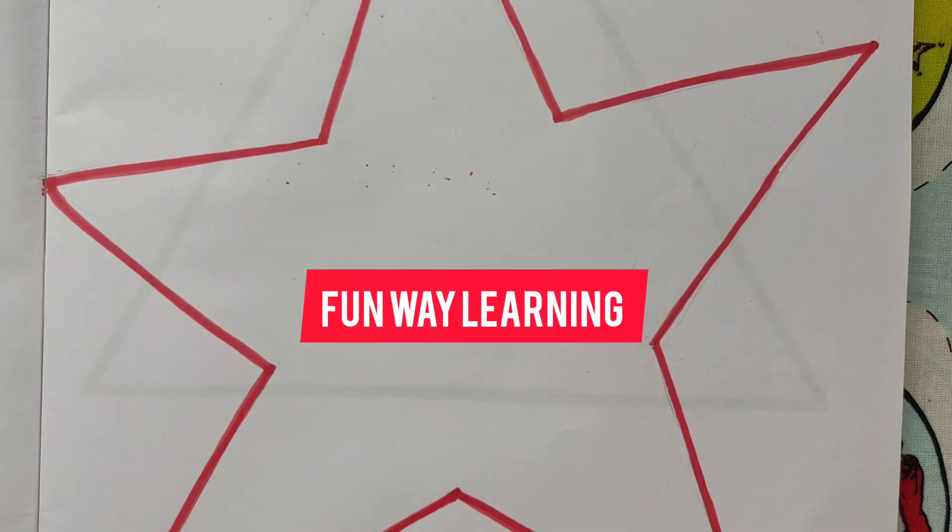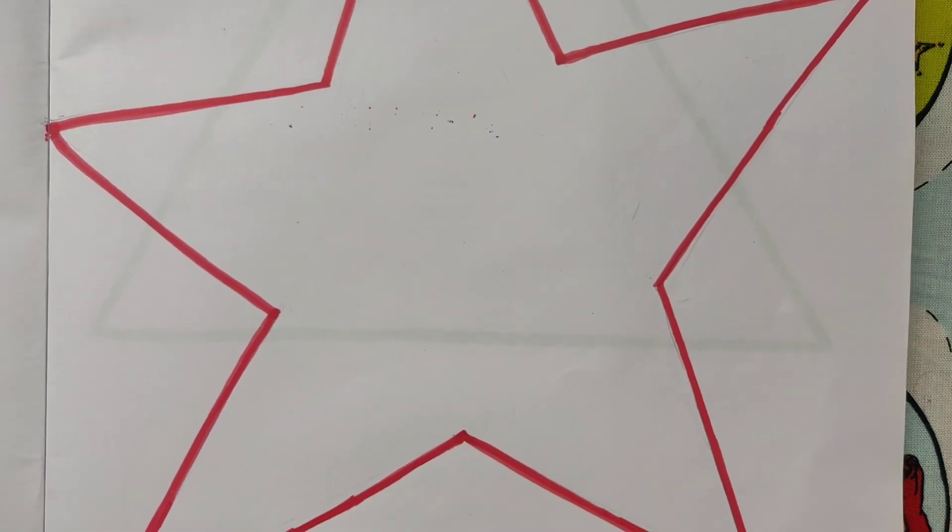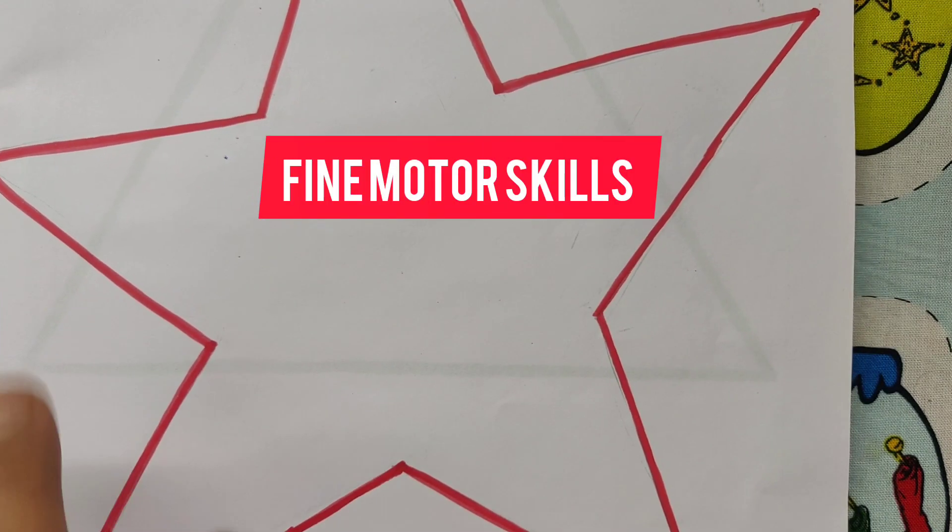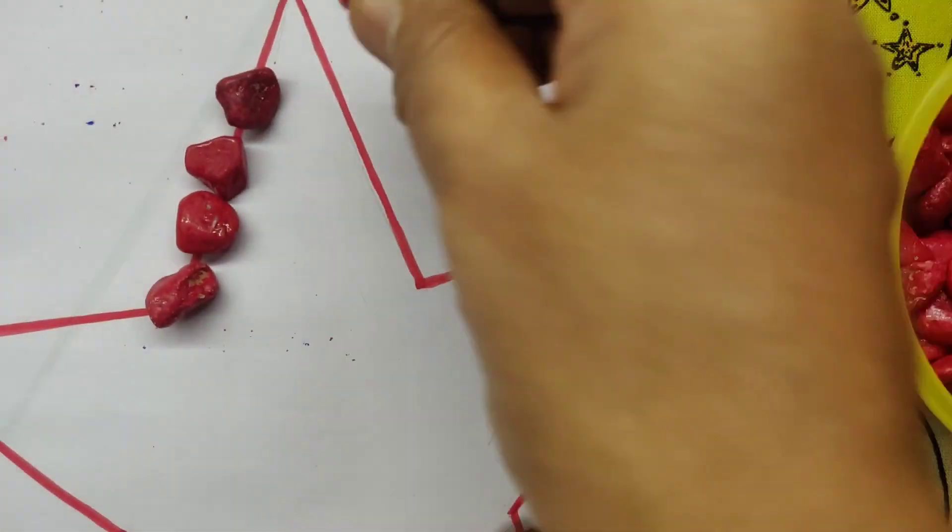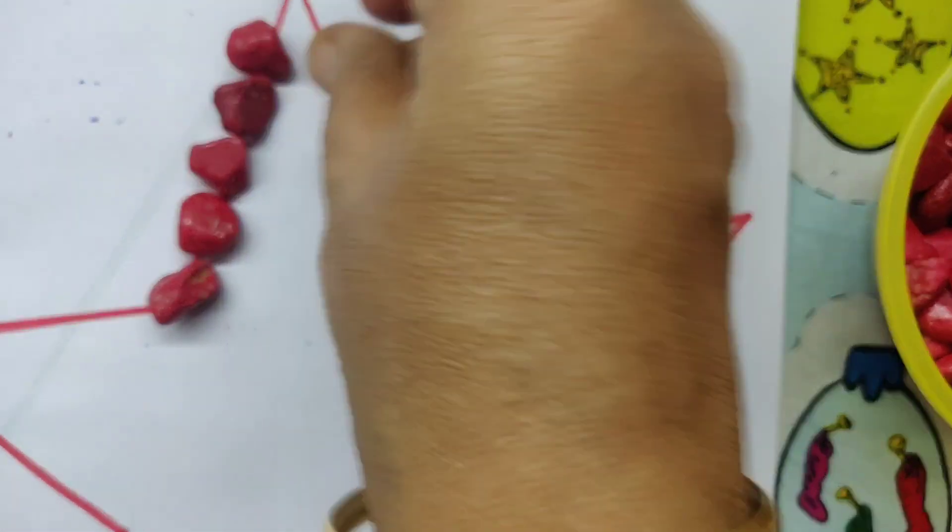What is this? This is a star, a red color star. Now in the star we will arrange these pebbles. What is the color? These are red color pebbles.